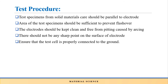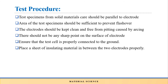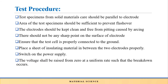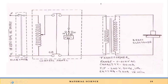Ensure that the test cell is properly connected to ground when working with high voltage. Place the sheet of insulating material properly between the two electrodes. Switch on the power supply and raise the voltage from zero at a uniform rate — for example, 2 kV per second — such that breakdown will occur. Note down the exact breakdown voltage, from which you can determine the breakdown strength of the solid insulating material.